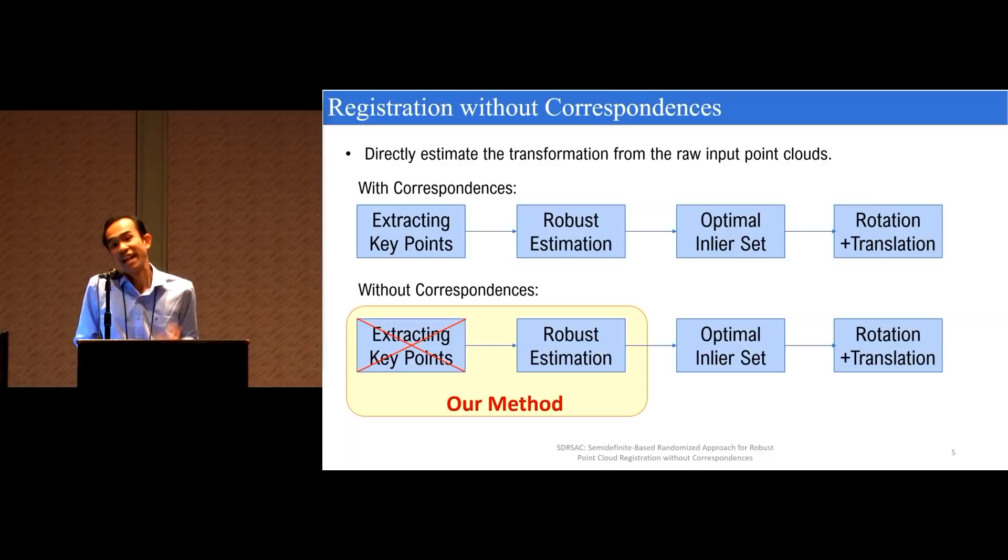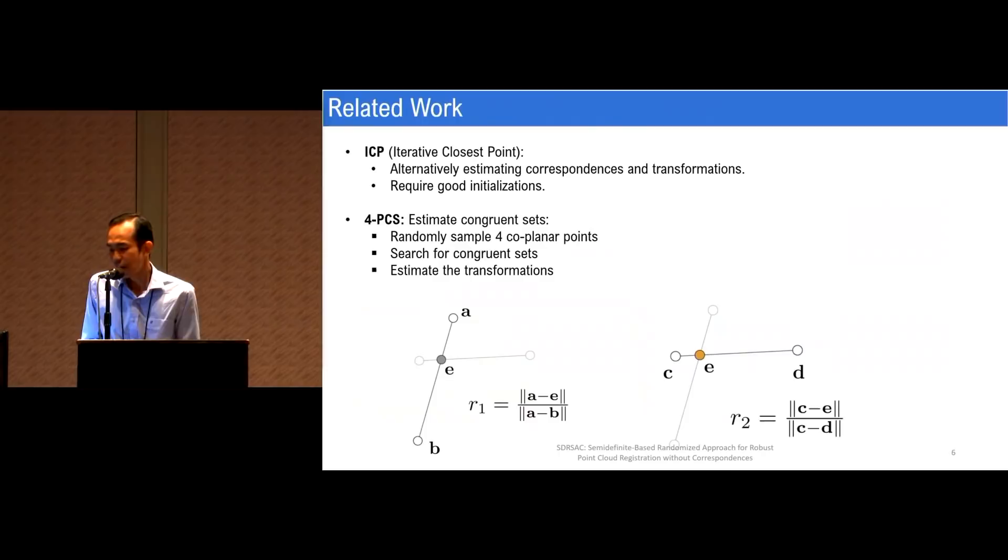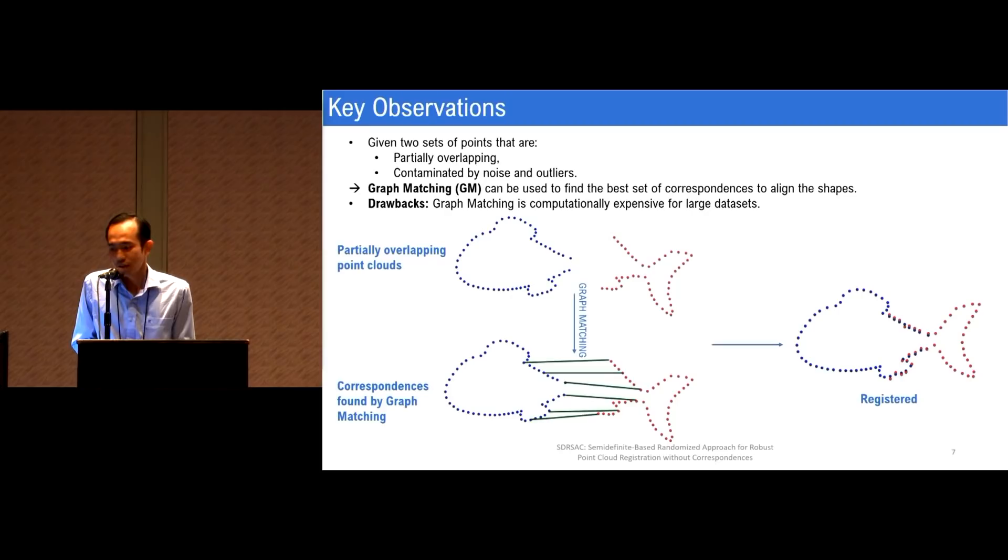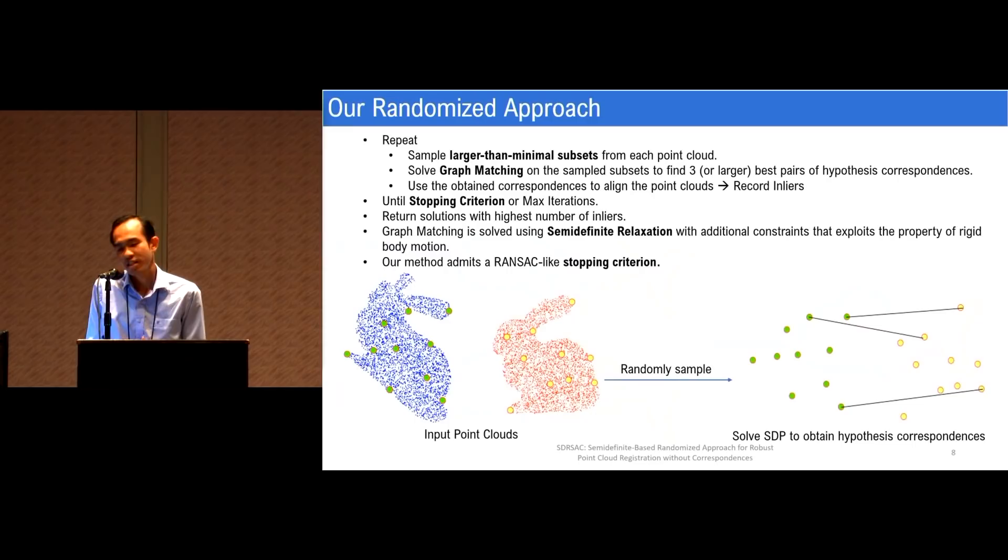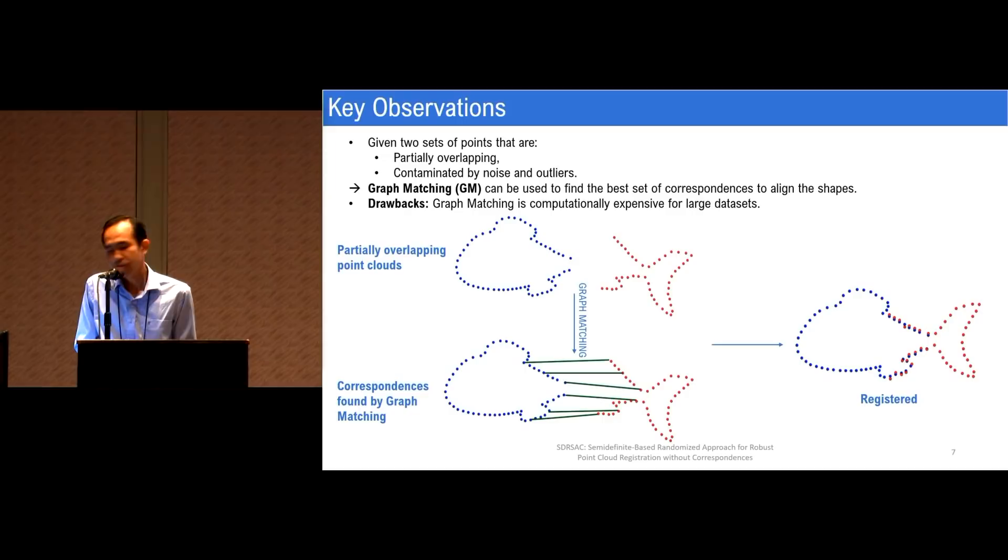Therefore, we design an algorithm that directly estimates the transformation from the raw input point cloud. Particularly, rather than extracting key points and conducting robust estimation, we propose to directly provide the optimal inlier set so that we can achieve the desired transformation. Our work is very closely related to other well-known approaches that also solve the same problem, for example, iterative closest points or four-point congruent sets. For ICP, we're alternately estimating the correspondences and the transformation, but it requires good initialization. For 4PCS on the other hand, is another randomized approach that searches for the congruent sets to estimate the transformation.